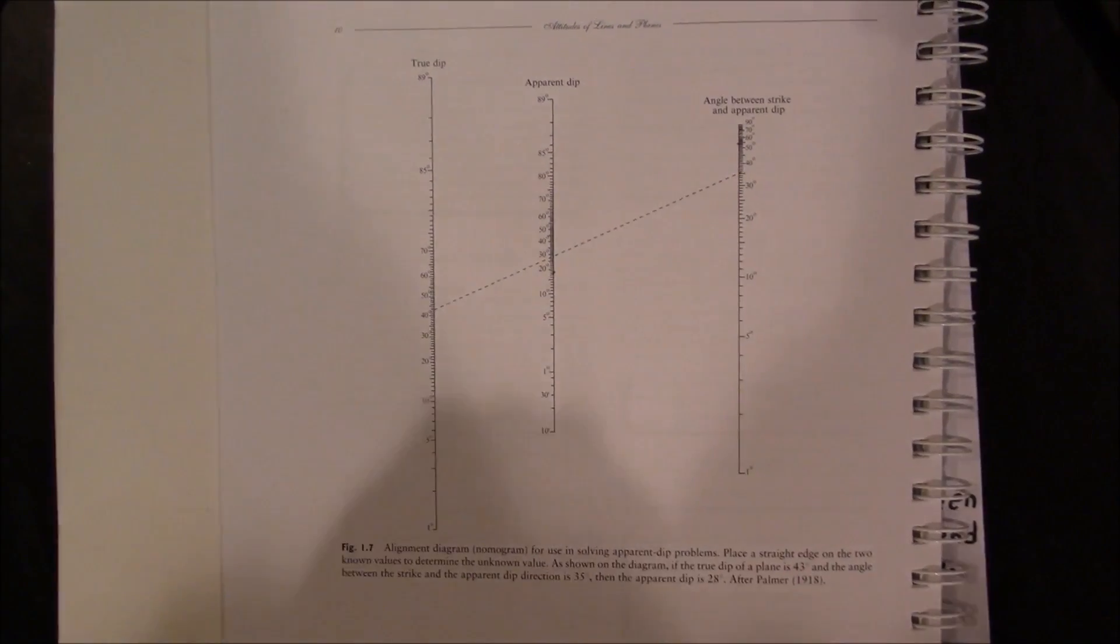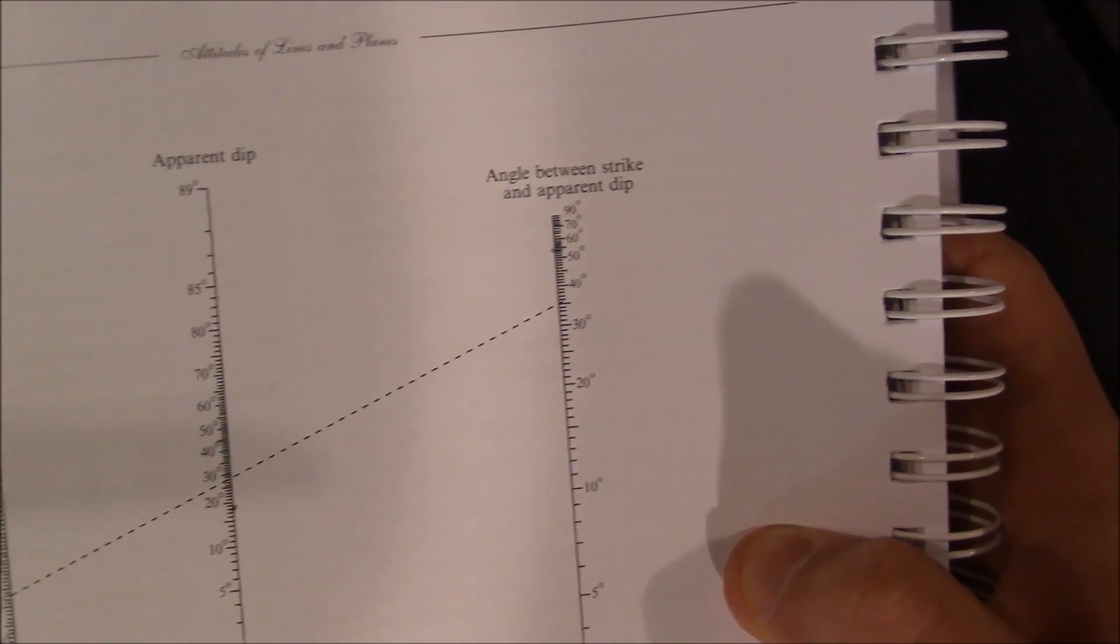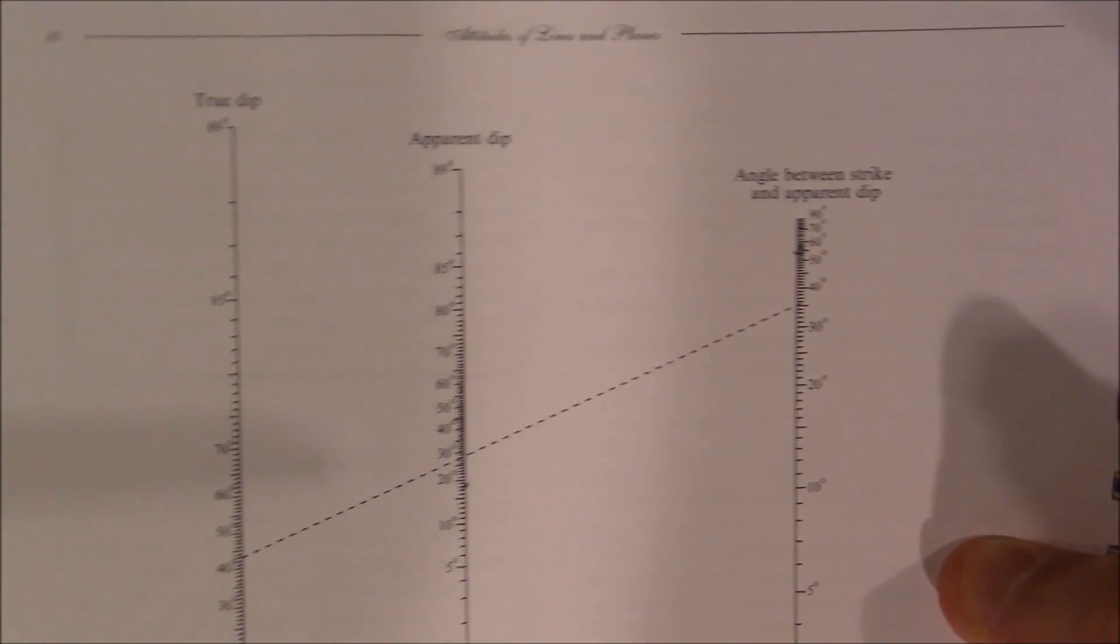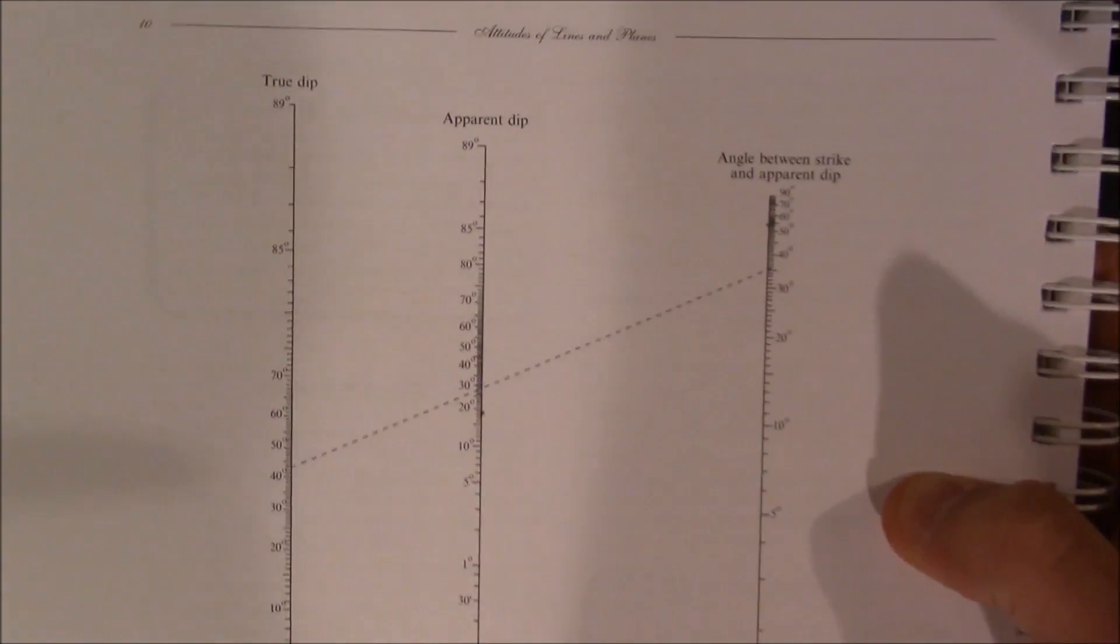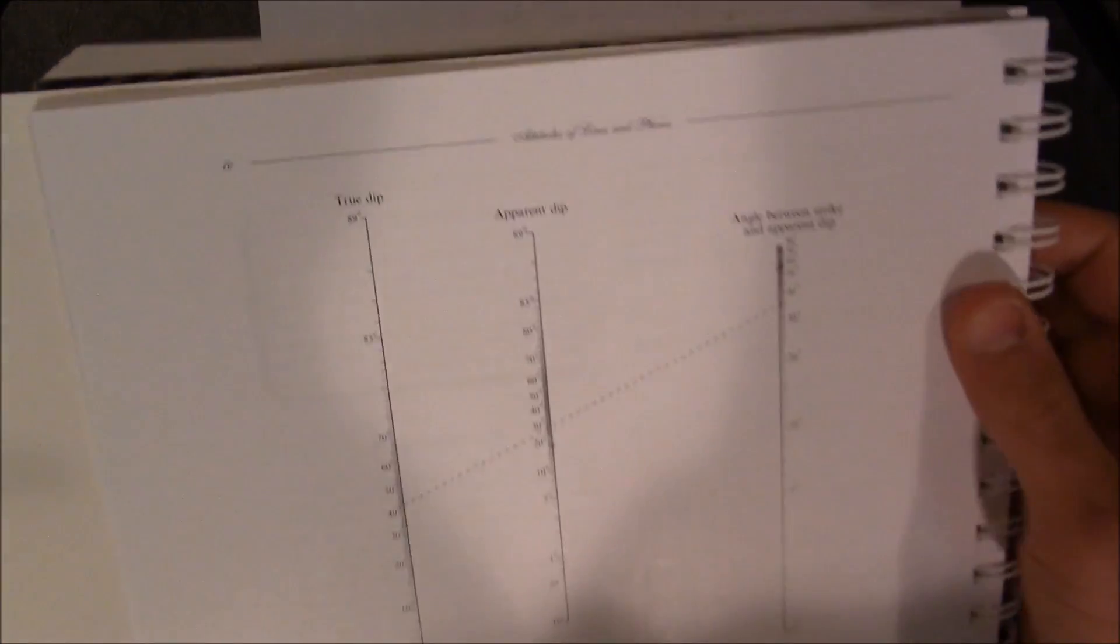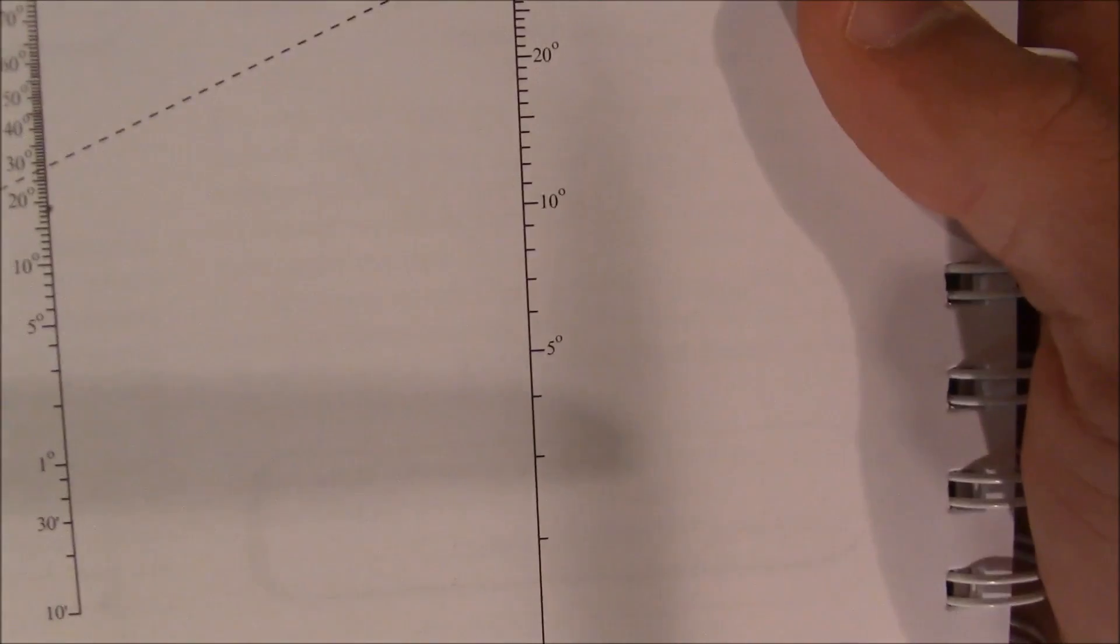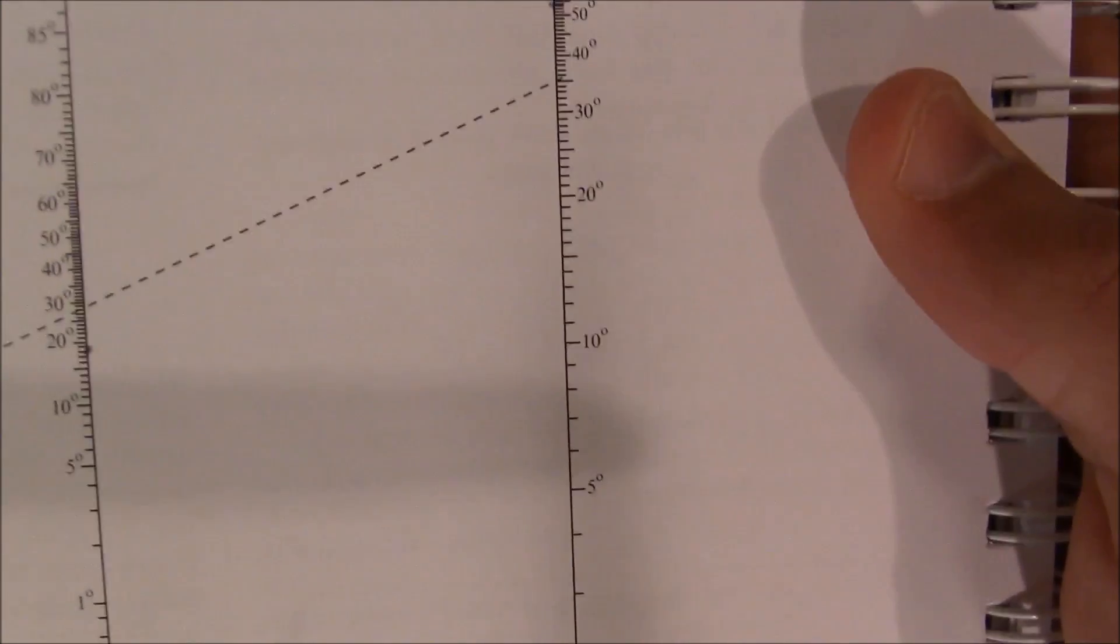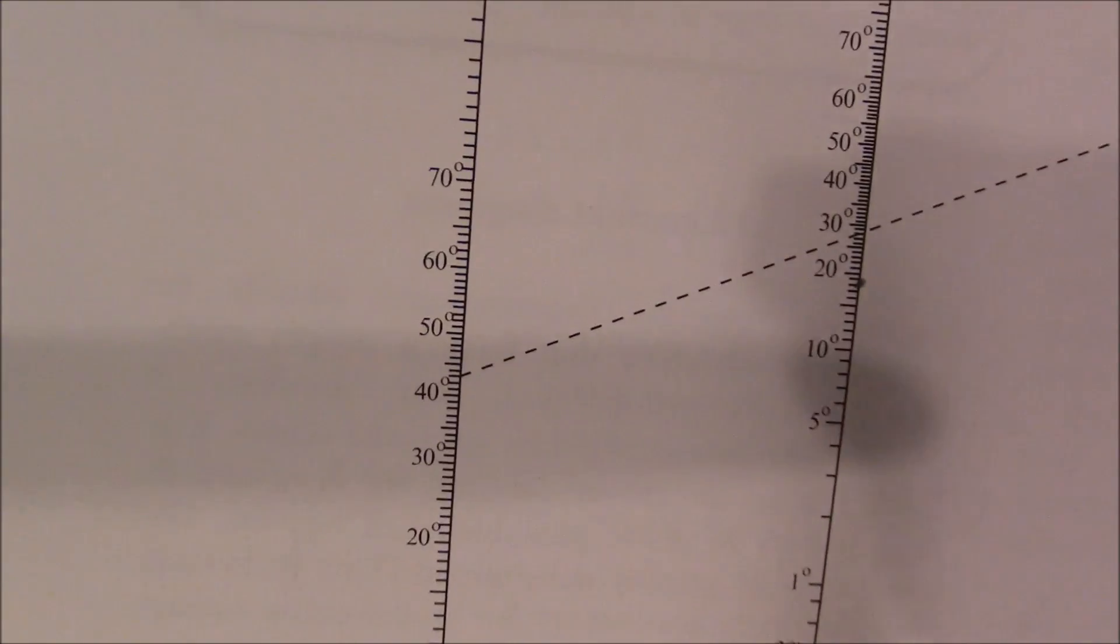It may be difficult to see, but what we have here is we've got three columns. We've got one for true dip, one for apparent dip, and one for the angle between the strike and the apparent dip. We need two of these values in order to find the third. And so what we have is we have the angle between the strike and the apparent dip, and we have the apparent dip. So what you'll notice is that these are given in very strange increments, but that's how this thing works. Each one has a different incremental system.